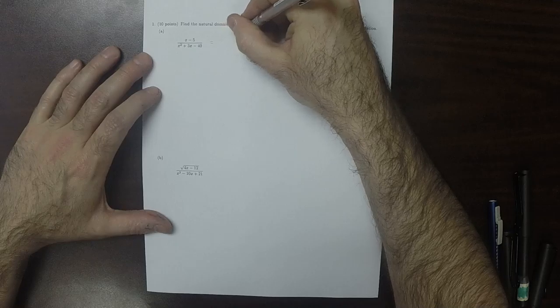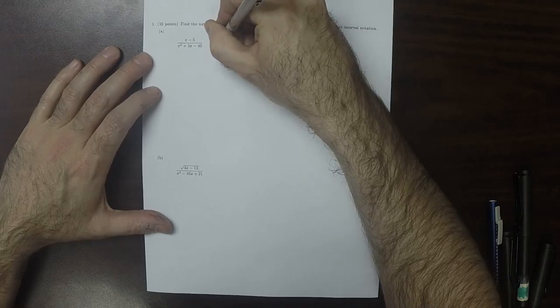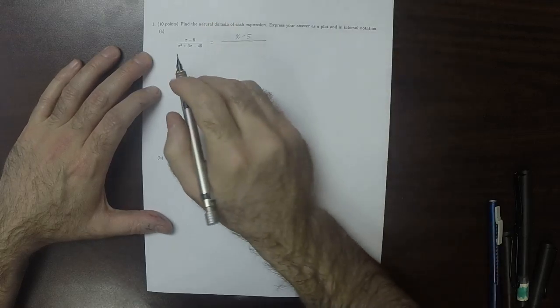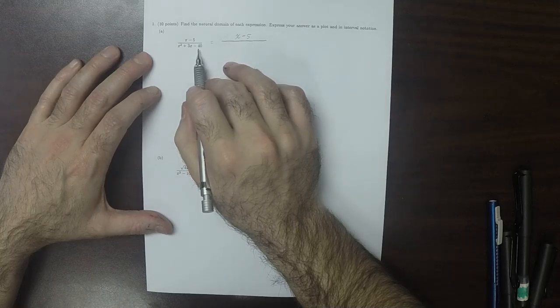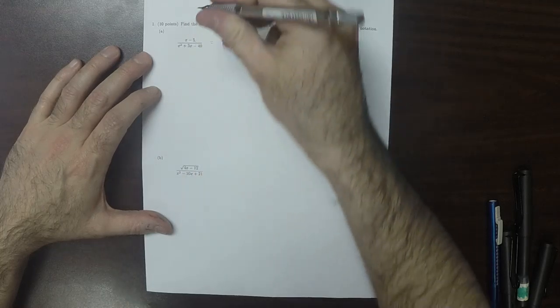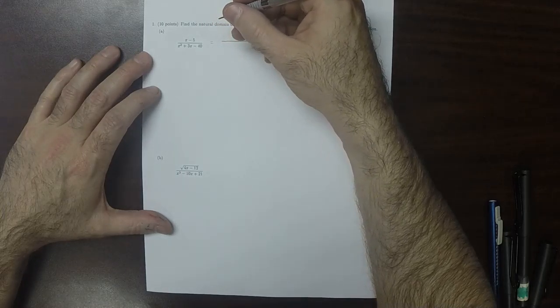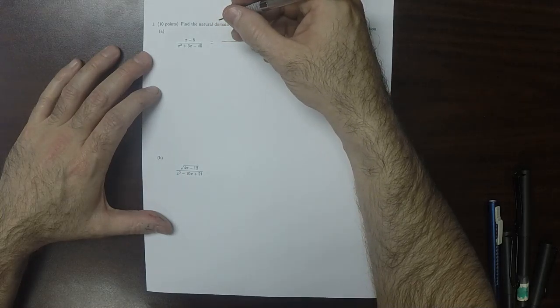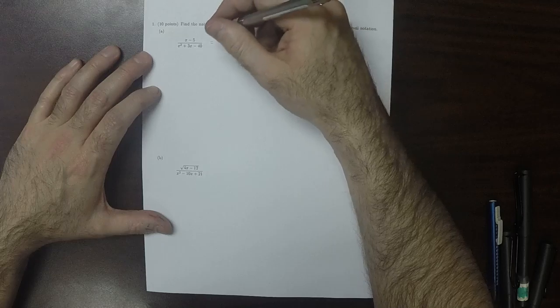So the numerator is already factored. The denominator, can we think of two numbers whose product is negative 40 and whose sum is 3? How about, let's see...